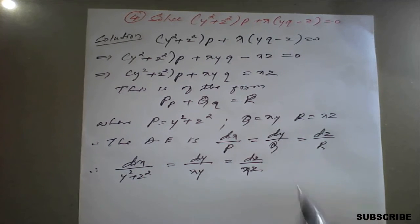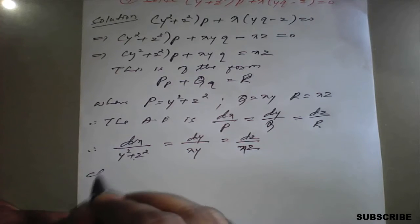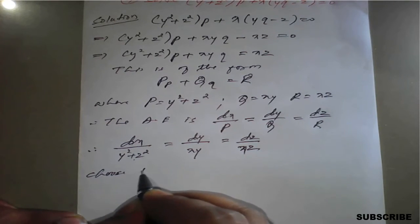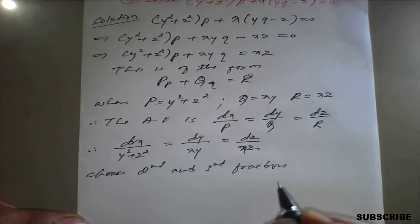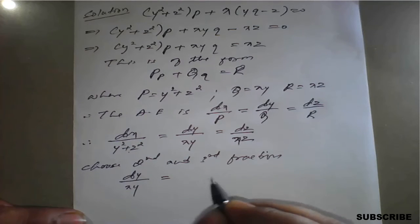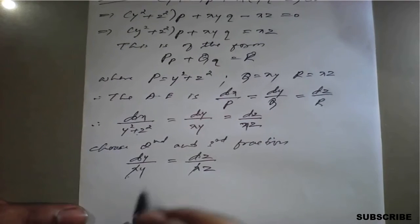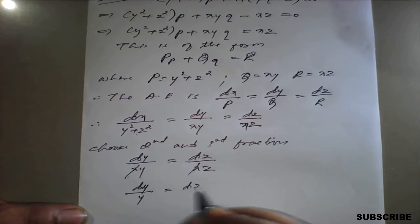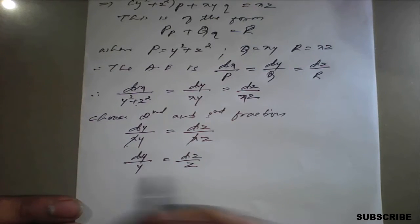Observe carefully. If we take the first two fractions, we cannot integrate directly. If we take the first and third, that is also not possible. But the second and third are possible. So we choose the second and third fractions: dy/(XY) = dz/(XZ). Here X and X cancel, leaving dy/Y = dz/Z.